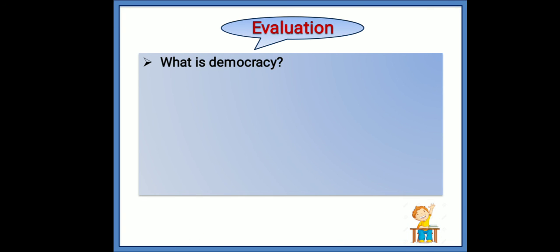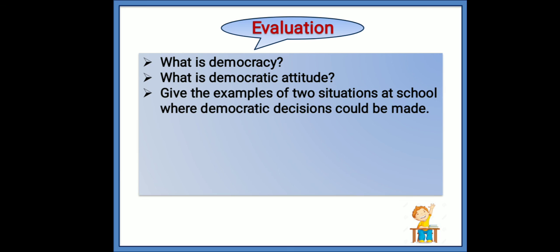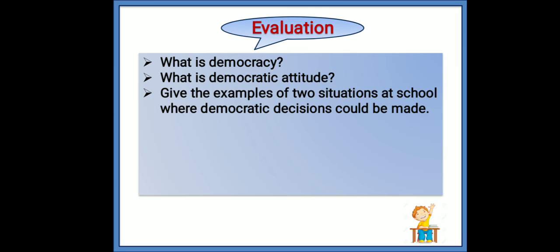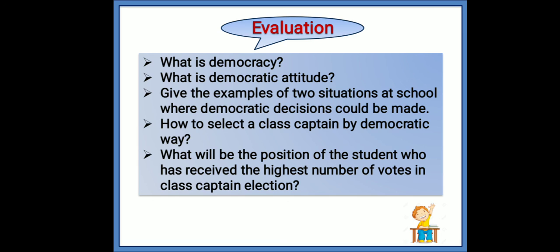First question: What is democracy? Democracy is rule by the people, rule for the people, rule of the people. Also discuss democratic attitude and give an example of a situation at school where democratic decisions could be made, and how to select a class captain by a democratic way. What will be the position of the student who has received the highest number of votes in a class captain election?